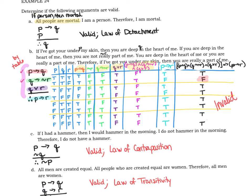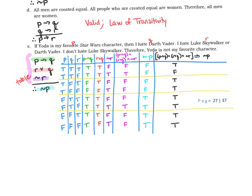Next we move on to part E at the bottom of the page, which also requires a truth table. In a very similar fashion to the last one, each highlighted portion is in the corresponding color. There is one false, and it happens to be in the exact same spot. Because we have one false as we evaluate the entire argument, that makes this invalid. All that work, just to find out it is invalid.